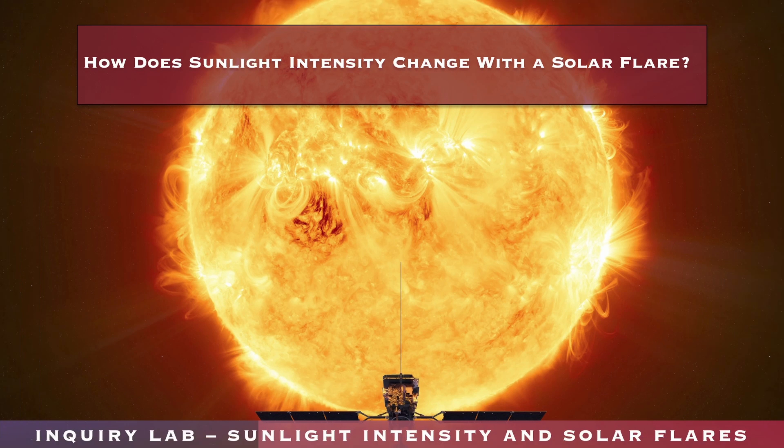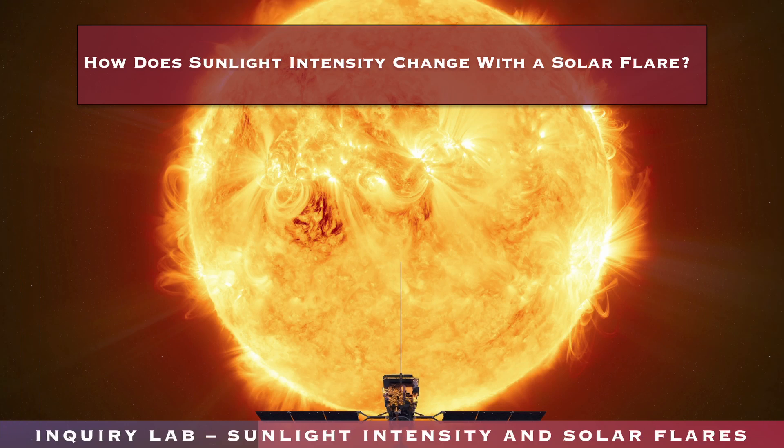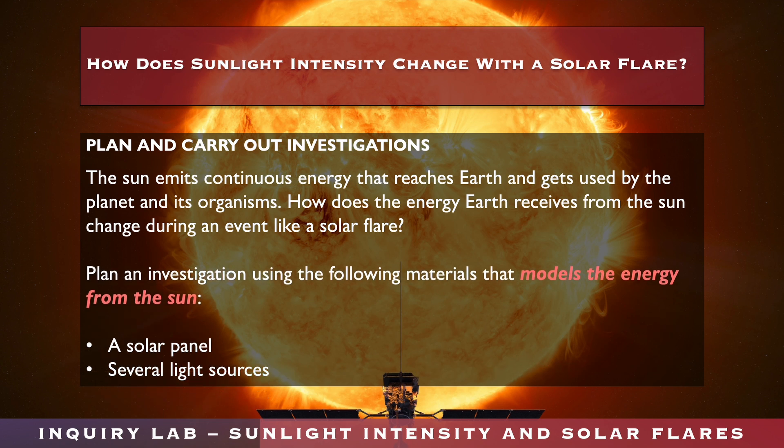Now that we have demonstrated some of the ways the sun's energy affects our planet, we turn to this experience's inquiry lab, titled Sunlight Intensity and Solar Flares. The lab's essential question is: how does sunlight intensity change with the solar flare? Your task will be to plan an investigation using a solar panel and light sources to model the energy from the sun. How can you use different light sources to model different light intensities from the sun? Continue on to watch the lab's overview.